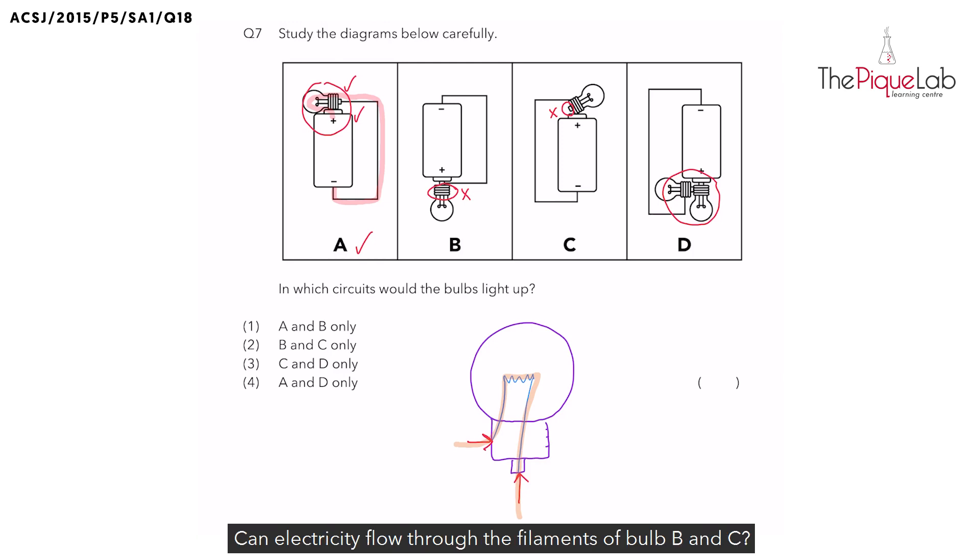Can electricity flow through the filaments of bulbs B and C? No, it cannot. Will these two bulbs light up? No, they will not. Let's take a look at our last option.